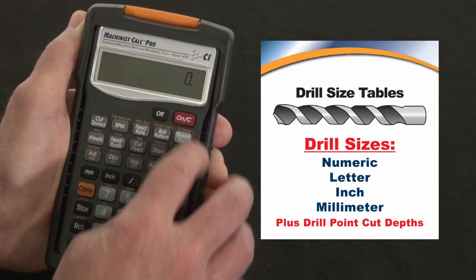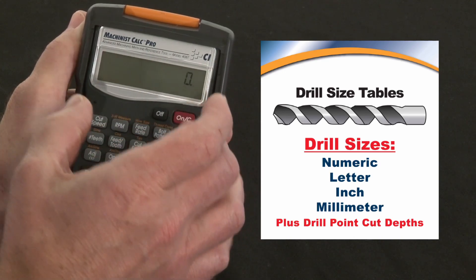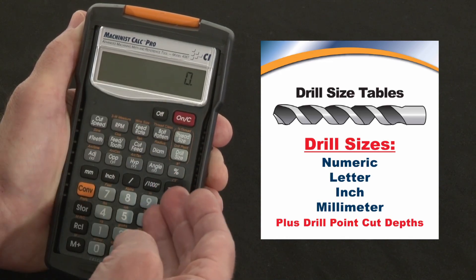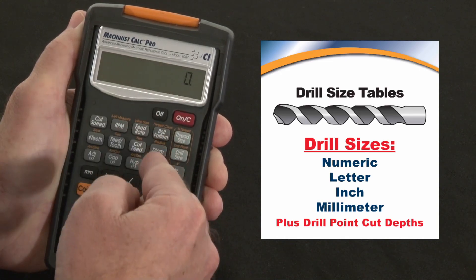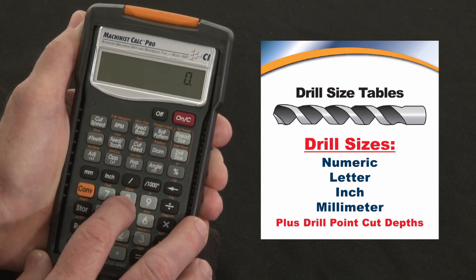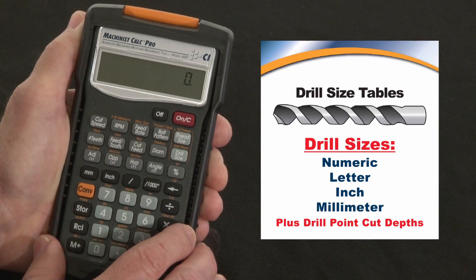There's also a function here. You may notice over the drill size key, that's the drill point depth cut depth. So if you've got to drill a hole of a certain diameter for a given depth, you need to over drill a certain amount based on the angle of the drill tip. Now the default drill tip in the calculator is 118 degrees, but you can set it for whatever you want. Let's use that 118 degrees again.